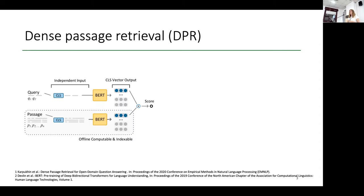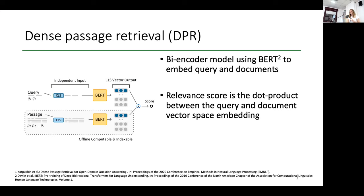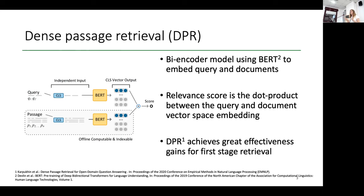Dense passage retrieval models are bi-encoder models which use a language model BERT to embed the query and the documents in the corpus. The relevance between the query and document is scored with the dot product between the query and the document embedding in the vector space. A vector space embedding is learned for the query, documents, and passages, and then the relevance is just the nearest neighbors of the embeddings. These dense passage retrieval models achieve great effectiveness gains for first-stage retrieval compared to traditional models like BM25.